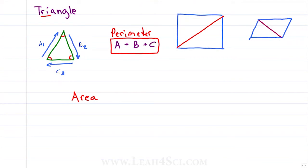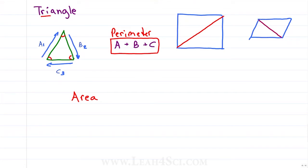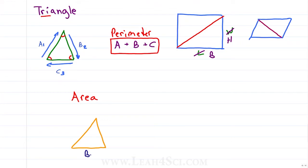The area of a triangle can be confusing, and this is where the cut-a-rectangle-in-half trick really comes into play. If we look at this rectangle and remember that the area is length times width, wouldn't it make sense that if I cut the rectangle in half, the area would be half of that? And that's exactly how you find the area of a triangle. Instead of length they call it the base — the bottom of the triangle — and instead of width they call it the height. To calculate the area, find the base, find the height to the tallest peak, and then take half of that: one-half times base times height.